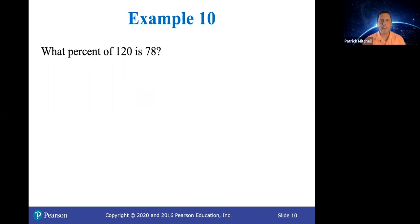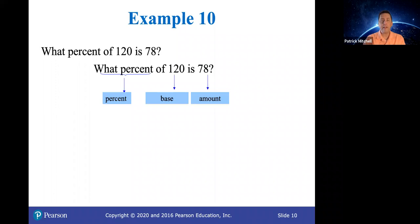I believe this is the last example. What percent of 120 is 78? So hopefully you'll pause the video and try this one, and then we can compare notes. So what percent? The percent is the unknown number. 120 is the base. 78 is the amount. So amount over base equals percent over 100 looks like this.